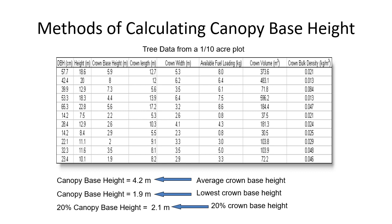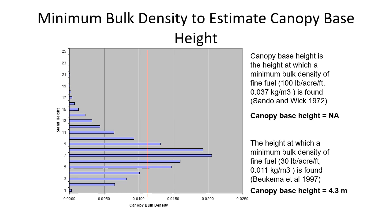The implications of method choice are significant. Using mean crown base height on a sample plot gives 4.2 meters, suggesting crowns need a sizable flame to ignite. But the lowest crown base height in the same stand is 1.9 meters — if that tree ignites, it could ladder fire into the canopy. The 20th percentile gives 2.1 meters. Method choice clearly has major implications for crown fire behavior predictions.